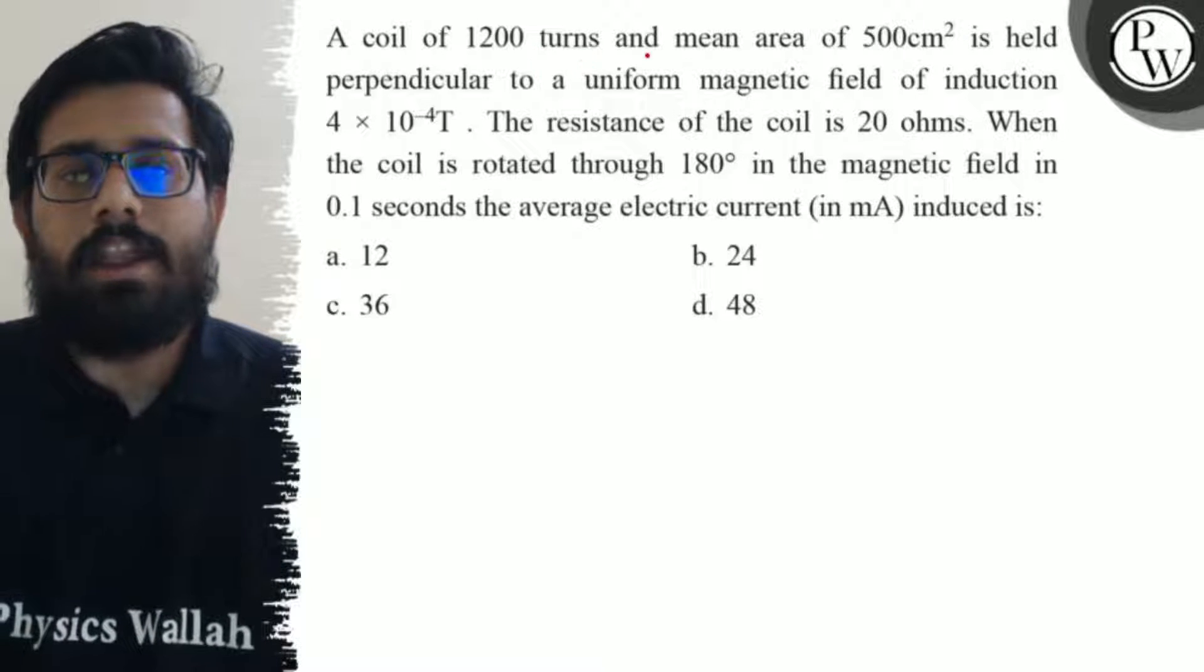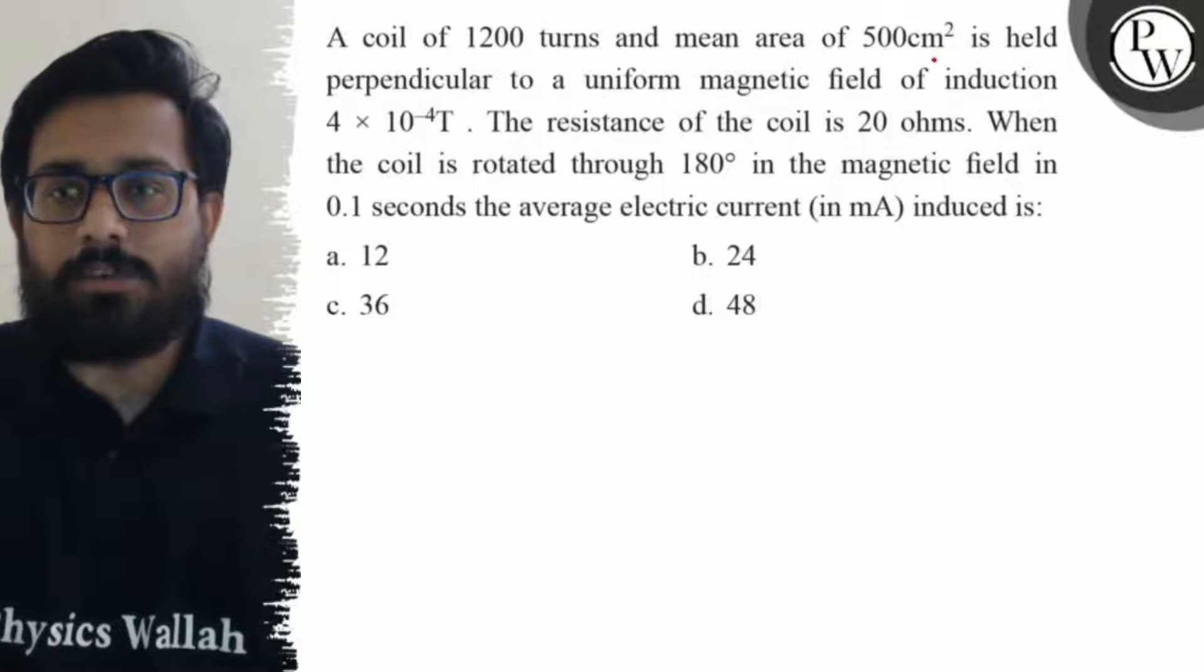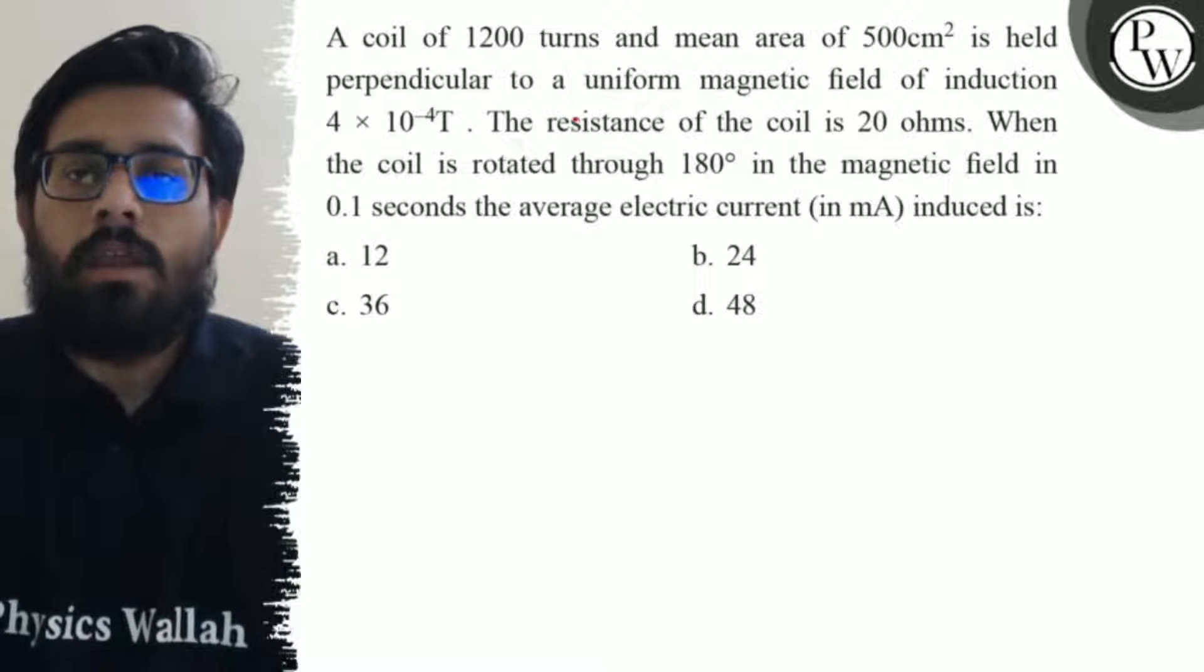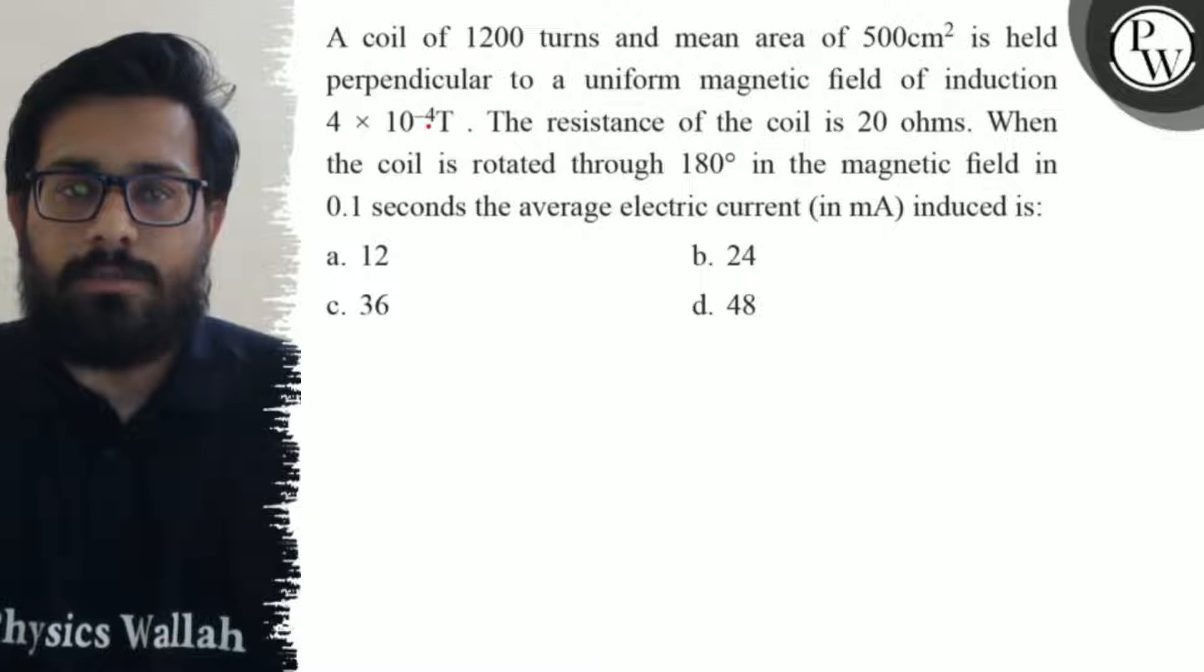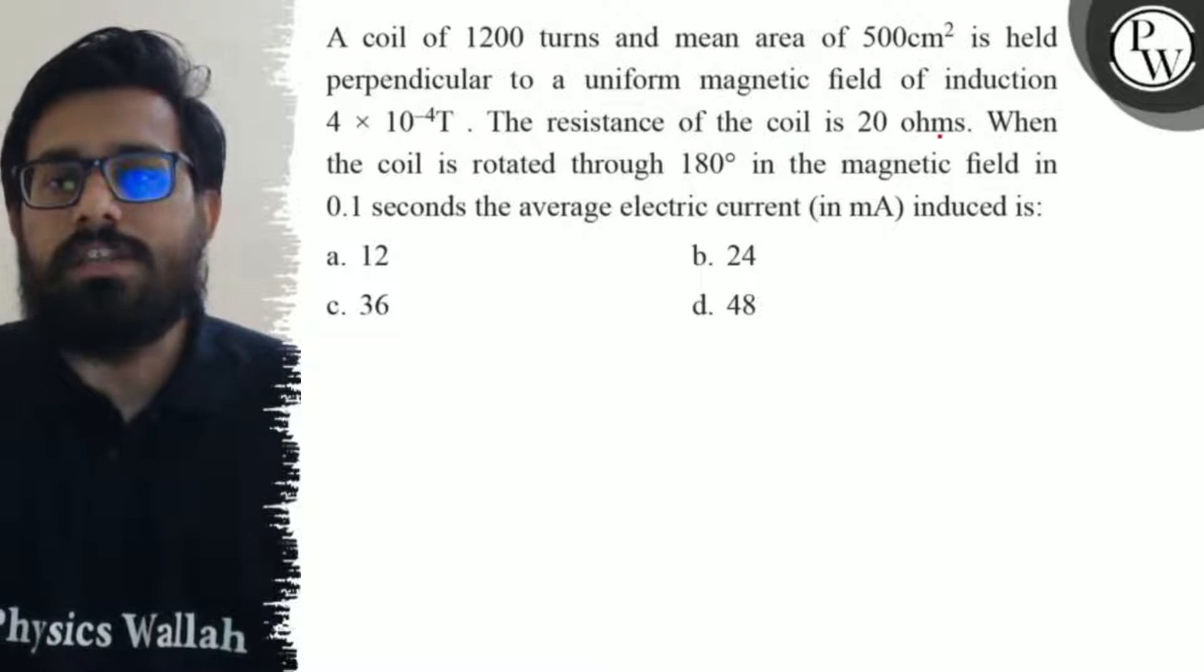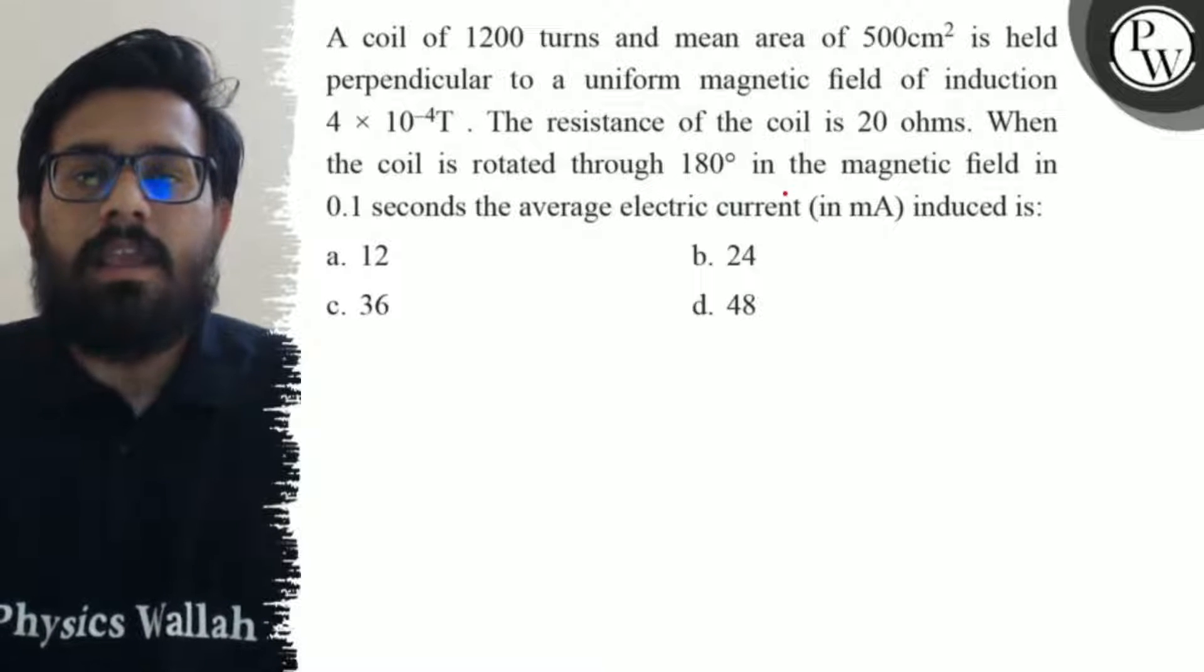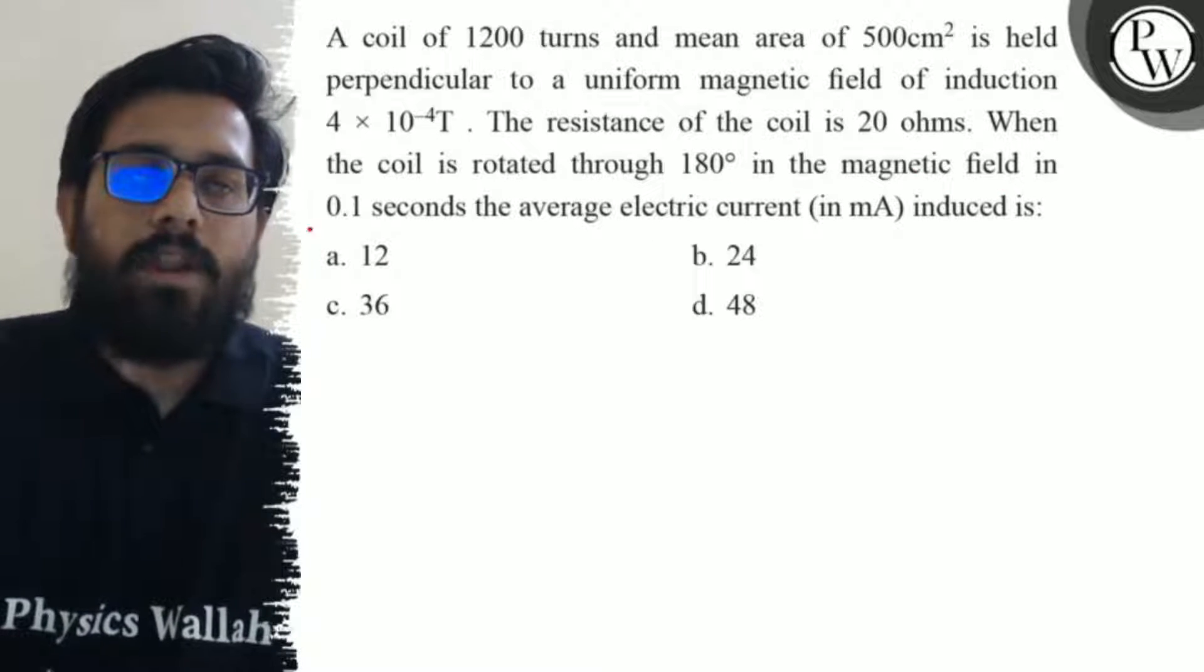A coil of 1200 turns and mean area of 500 cm² is held perpendicular to a uniform magnetic field of induction 4×10⁻⁴ Tesla. The resistance of the coil is 20 ohms.